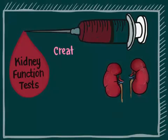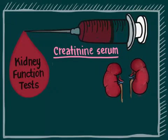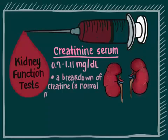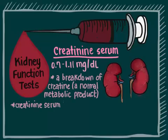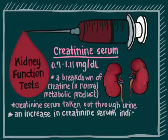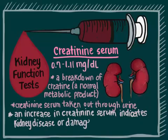Creatinine serum: normal range is 0.7 to 1.11 mg per deciliter. Creatinine is a breakdown product of creatine, a normal metabolic byproduct. It is taken out of your body by the kidneys to be passed into the urine. An increase in blood creatinine indicates kidney disease or damage.